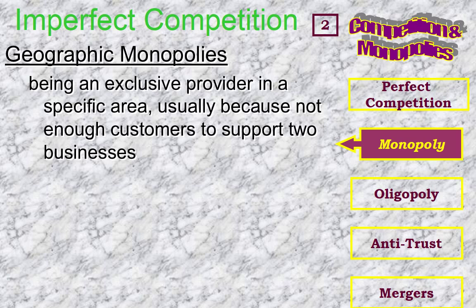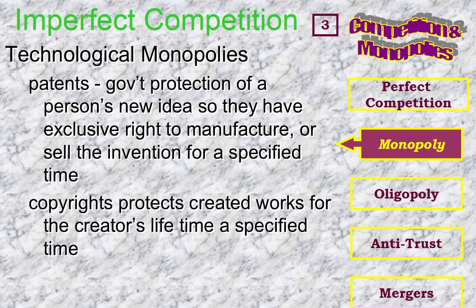Another way to maintain a monopoly in an industry is by technology. As people invent or develop new ways of using inventions, these are patents. Patents are a government's protection of a person's new idea so that they benefit from their idea instead of everyone stealing it and making money off of it even though they didn't think of it. The patent gives them the exclusive right to manufacture or to sell the invention for a specified amount of time. There are also copyrights — if you wrote a book, you would have the exclusive rights to sell it to anyone who wanted to read it. No one could steal that book and say they wrote it. That is an example of a technological monopoly.